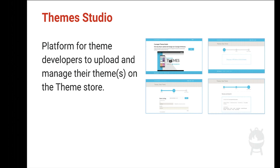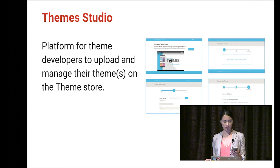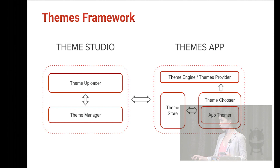App themer allows the end user to customize just one app while the rest of the device remains in its original theme. Lastly, we have the theme studio — a platform where theme developers can upload their themes to the store, and it allows them to track downloads and manage their themes. The products I just talked about form a framework that ties everything together.